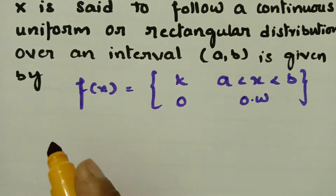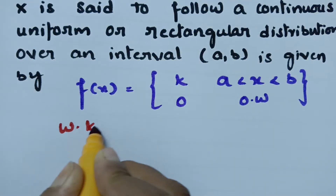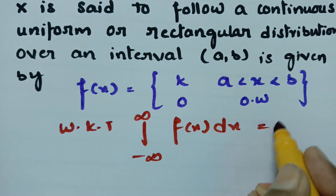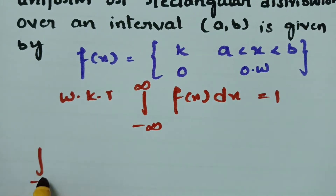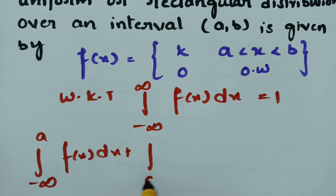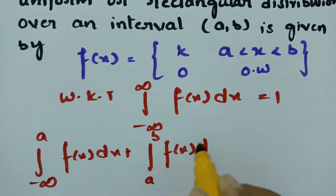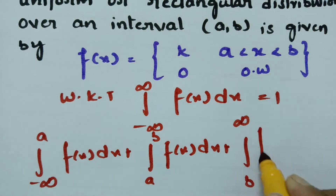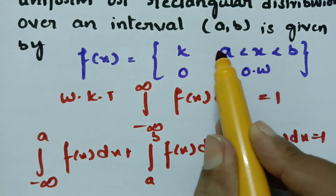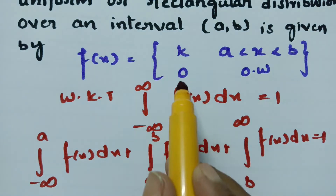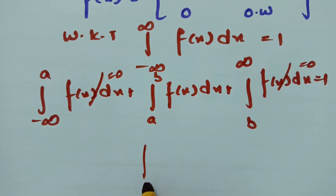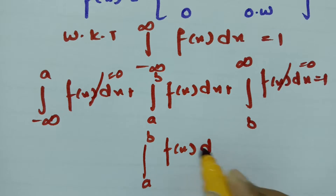As we know, the total probability is always equal to 1, that is the integral from minus infinity to plus infinity of f(x) dx equals 1. This splits into three parts: minus infinity to a, then a to b, then b to infinity. Since f(x) is 0 outside (a, b), those outer parts vanish, leaving the integral from a to b of f(x) dx equal to 1.